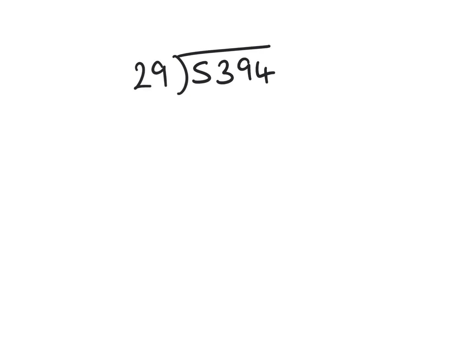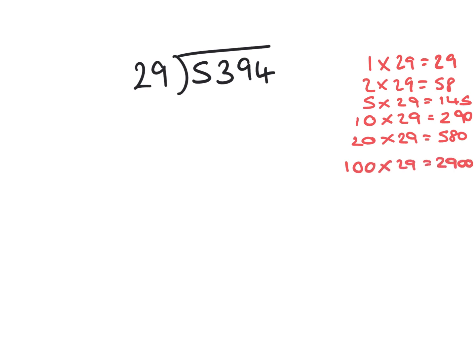The first thing I would do is create a chunking map. 1×29=29, 2×29=58. Then I would choose 10×29=290, and 5 lots is half of that, so 145. 20×29 is double the 10 lots, that's 580. Then we have 100×29 which is 2900, and the final chunk is 50 lots, which is half at 1450.